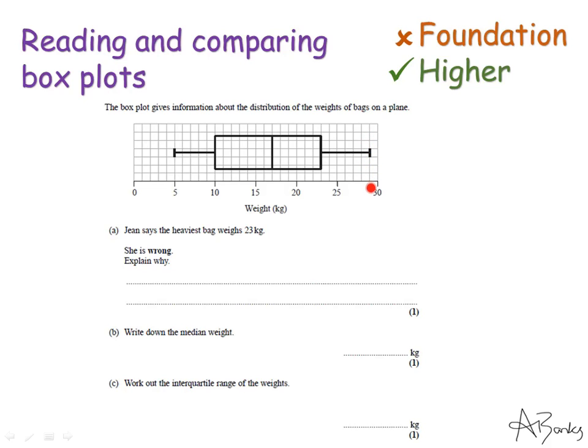It's actually 29 kilos. The 23 that Jean has read is this line here which represents the upper quartile. So I'm going to write that 23 kilos is the upper quartile. And I'm also going to write what the actual answer is. So I'm going to put 29 kilograms is the heaviest bag.